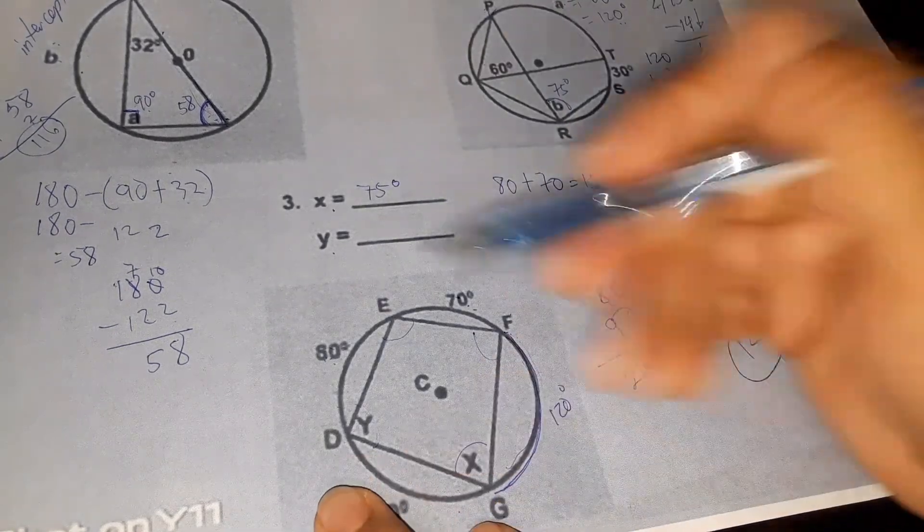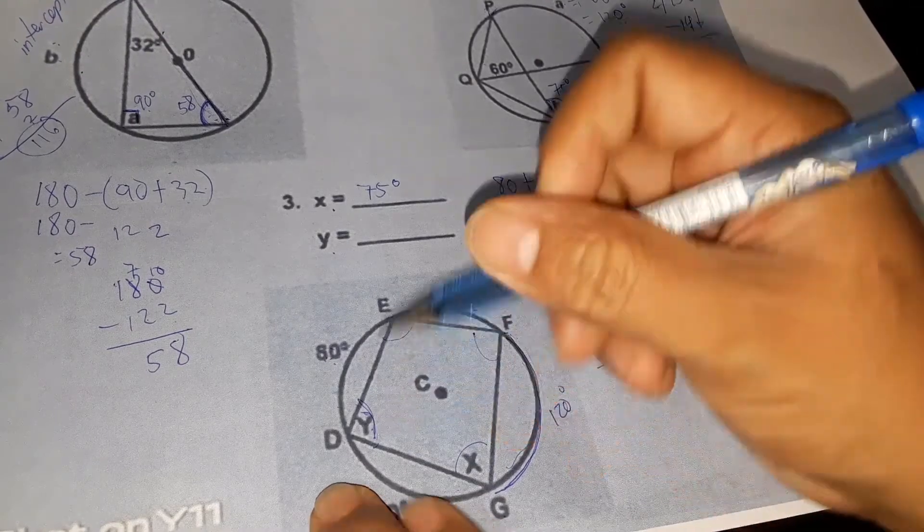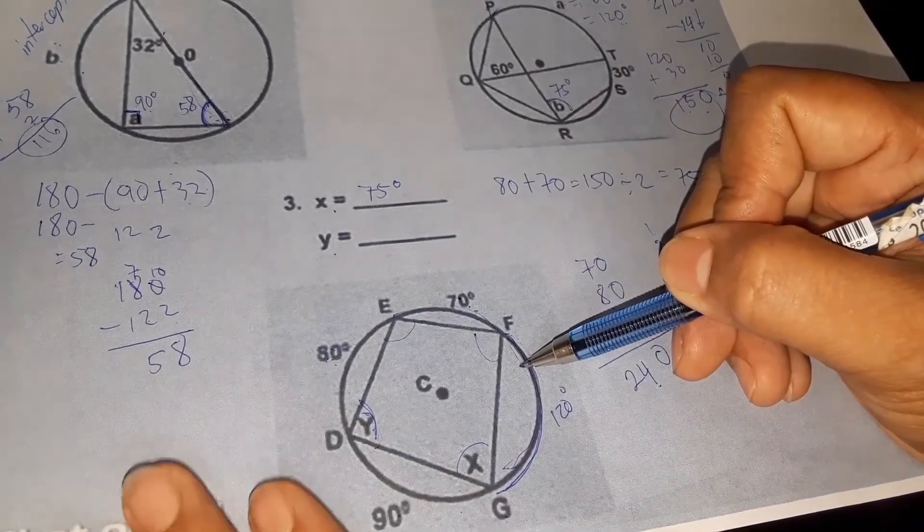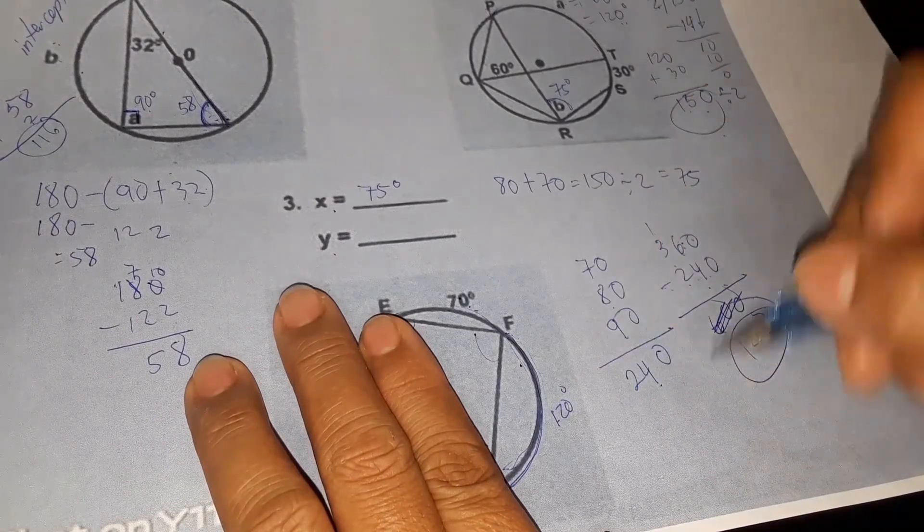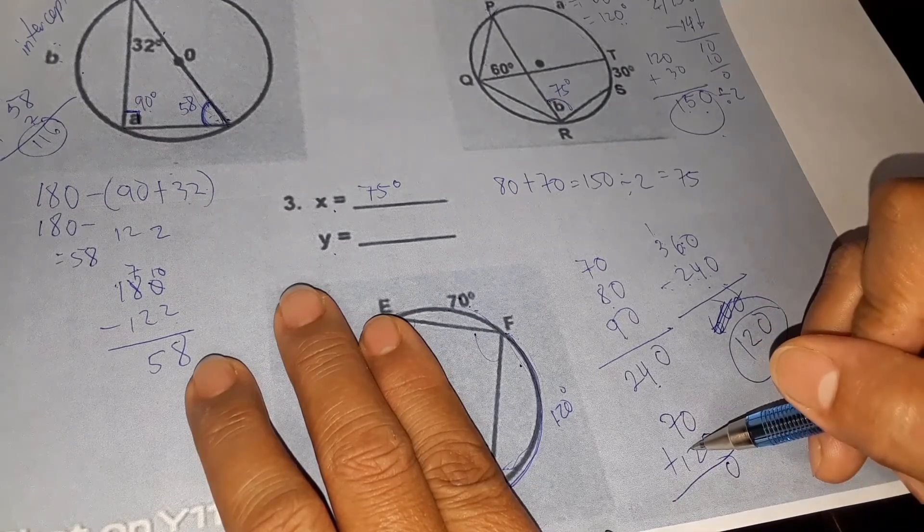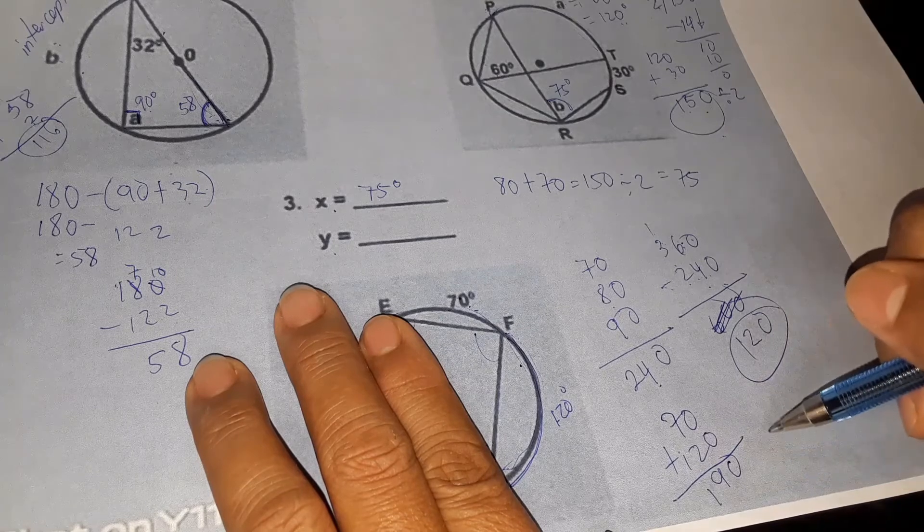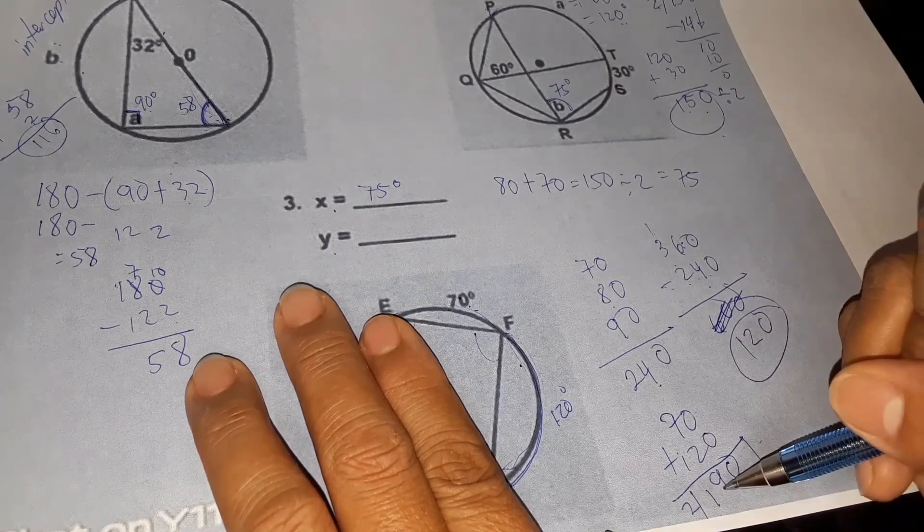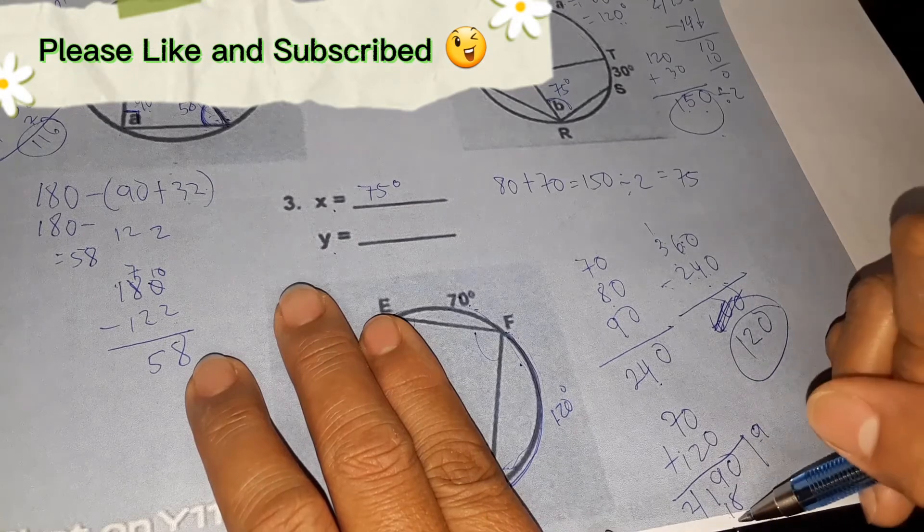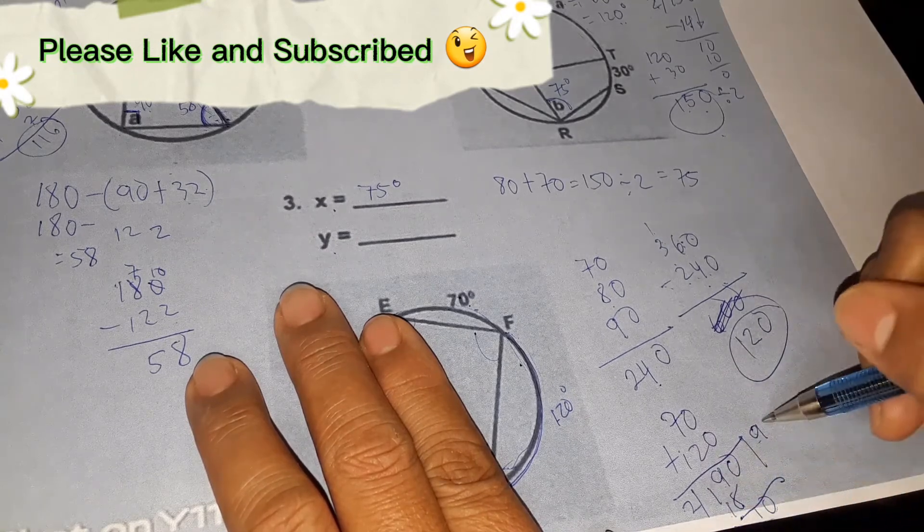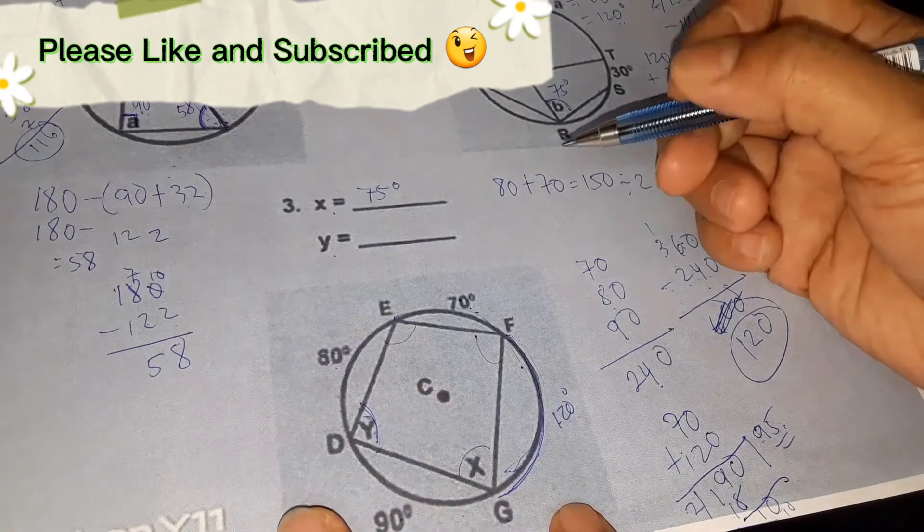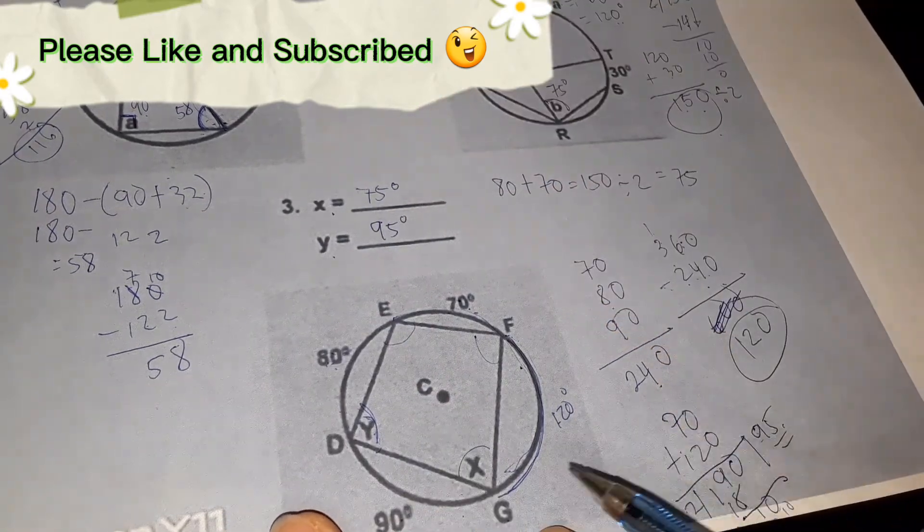How about y? Y is the same, it's an inscribed angle and its intercepted arc is 70 plus 120. So let's add 70 and 120. 70 plus 120, 0, 7 plus 2 is 9, 1, so 190 divided by 2. We have 19 divided by 2, we have 8, 9, 9 times 2 is 18, subtract 1, 10, 10 divided by 2 is 5. So we have 95 degrees. So y is 95 degrees.